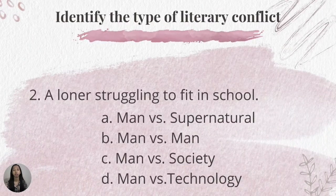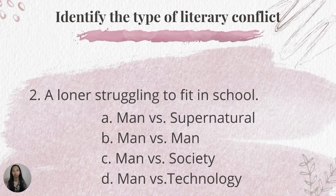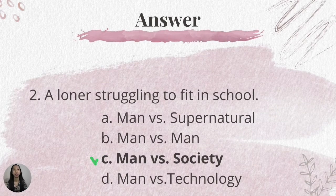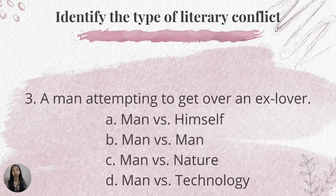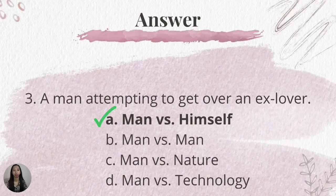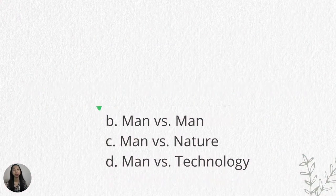Number two: A loner struggling to fit in at school. A. Man versus supernatural. B. Man versus man. C. Man versus society. D. Man versus technology. The correct answer is letter C, man versus society. Number three: A man attempting to get over an ex-lover. A. Man versus himself. B. Man versus man. C. Man versus nature. D. Man versus technology. The correct answer is letter A, man versus himself.